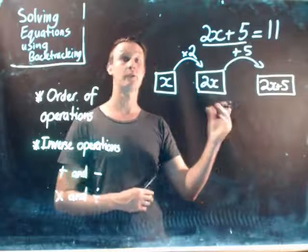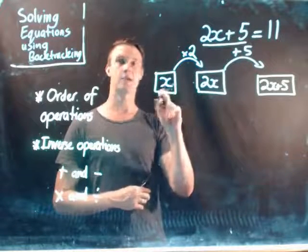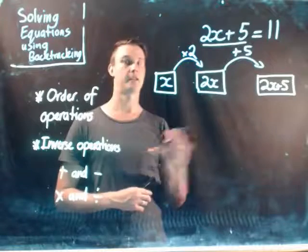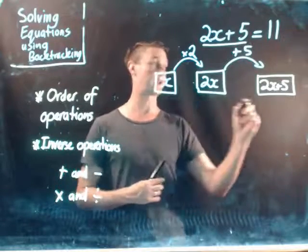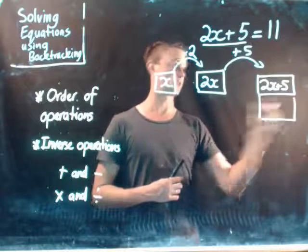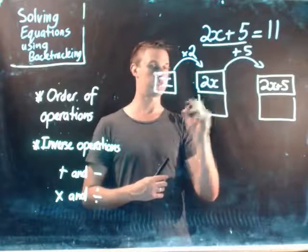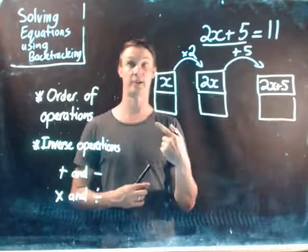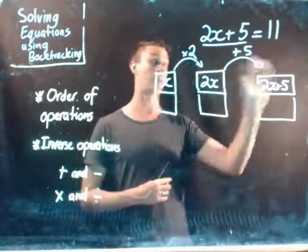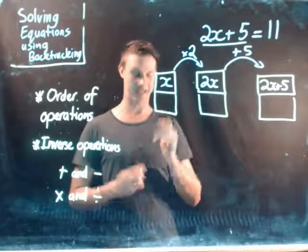But if we want to be able to answer x, we then need to do backtracking. So with backtracking, we effectively do the opposite, and we're going to create a whole new section underneath this. Okay? So if I double these boxes here, I'm now going to create a flowchart in the opposite direction. And if I follow it, I should be able to get an answer here for x.